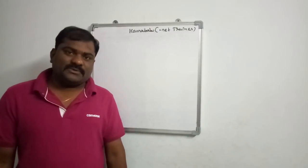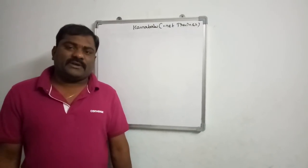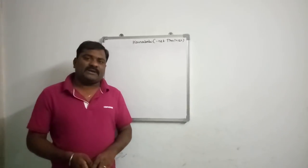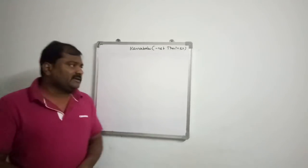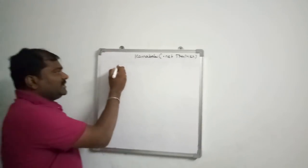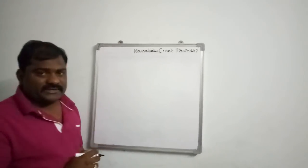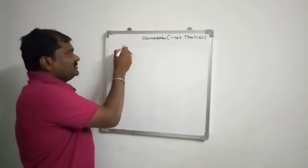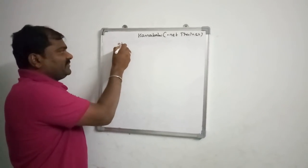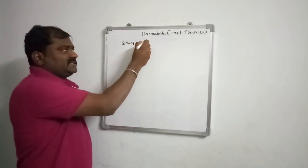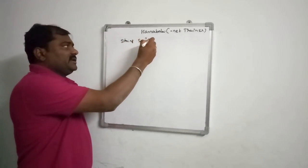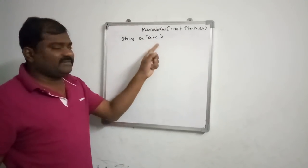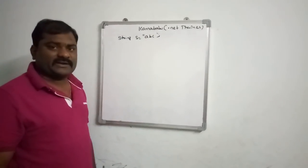Hi, this is Kannabagoo. In this video we will discuss about string and string builder in .NET. We already know what a string is — string is nothing but a group of characters. For example, if I try to declare string S equal to ABC, here ABC is a group of characters.